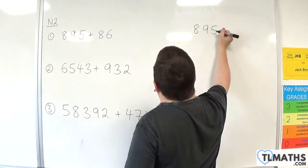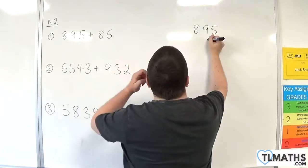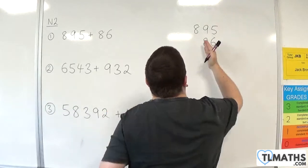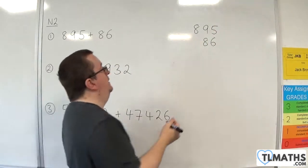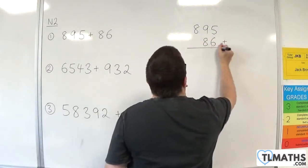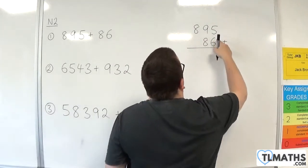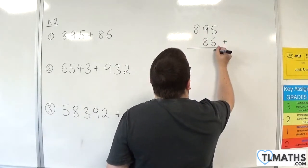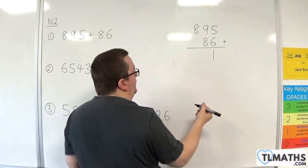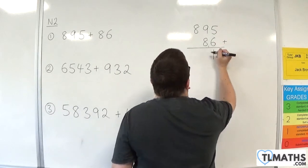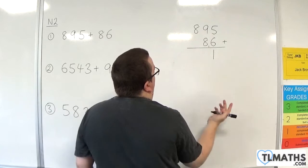So 895 plus 86. Make sure the tens column and the units column match up like that, and then I'm going to put the plus there. So 5 plus 6 is 11. So I write down the 1 from the units of 11, and then I've got the 1 from the tens. So we should read 11 like that.